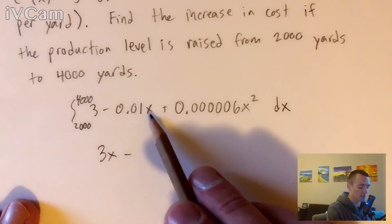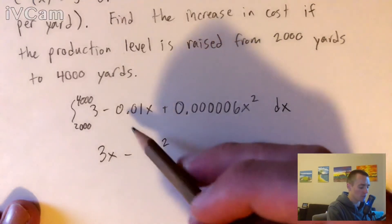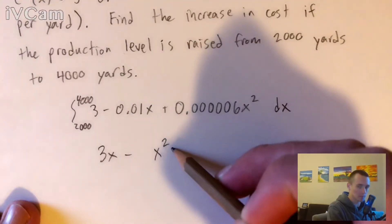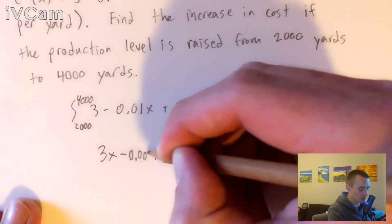Then we need to divide our coefficient by this new power. 0.01 divided by 2 is going to give us 0.005.